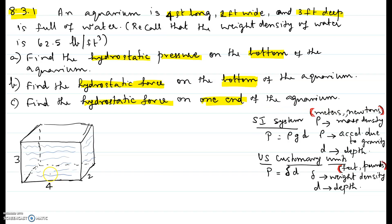Have a look at the picture we have drawn: 4 feet length, 2 feet wide, and 3 feet deep — it's an aquarium. Recall that the weight density of water is given in the problem as 62.5 lb per feet cube. It is the force per unit volume, so it is lb per feet cube.